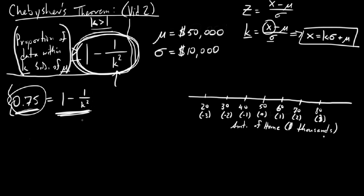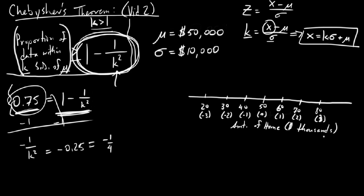So 0.75 equals 1 minus 1 over k squared, and we solve for k. Subtracting 1 from both sides: negative 1 over k squared equals negative 0.25, or negative one-fourth. Since both sides are negative, we make them both positive, giving 1 over k squared equals one-fourth. Reciprocating both sides: k squared equals 4 over 1, or 4. Taking the square root: k equals plus or minus 2.